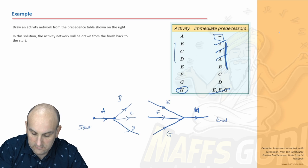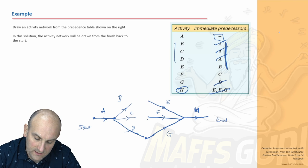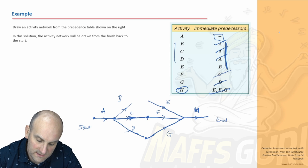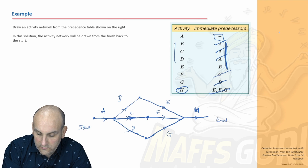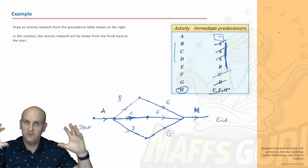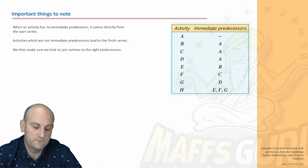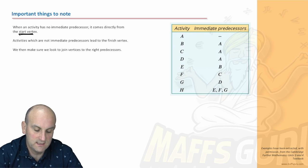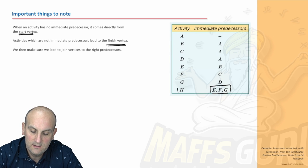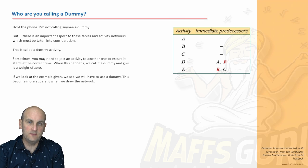E can only start when B is finished, so I extend B a little and connect it to E. And we're done — start from both ends and meet in the middle is so much easier. Key things to note: when an activity has no immediate predecessor it comes directly from the start vertex. Activities which are not immediate predecessors of anything lead to the finish vertex. Join vertices to the right predecessors.